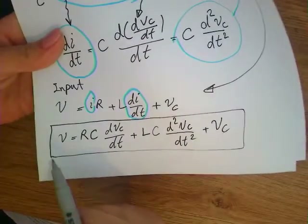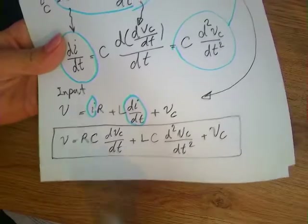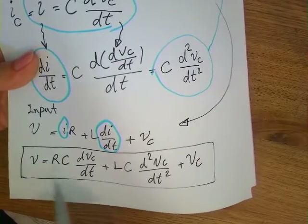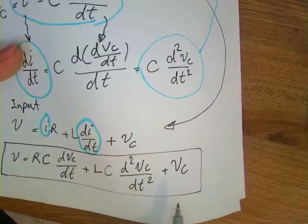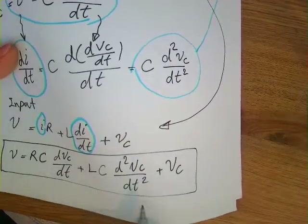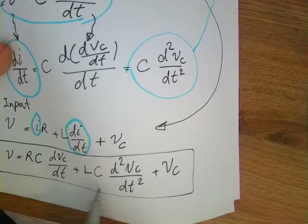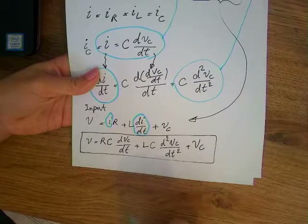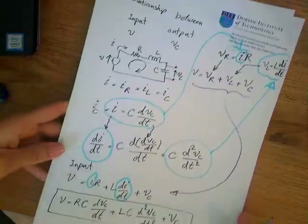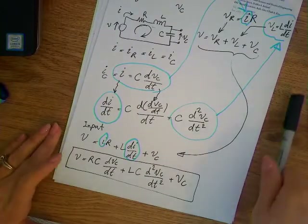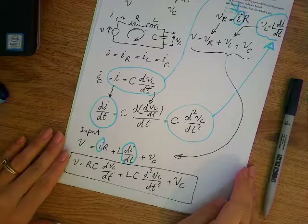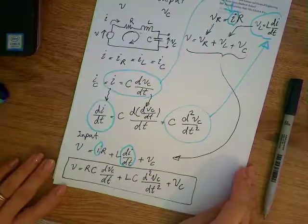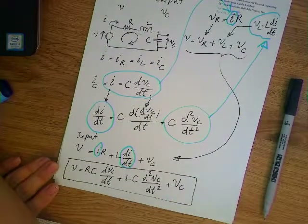This is the final equation for this example. On the left side is the input V, the voltage supply, and on the right side everything is related to VC or some order of its derivative, and the rest — R, C, L — are all constants. That is the answer for this example. If you have a similar question in a quiz asking you to derive the relationship between input and output, this is the way you would derive it.